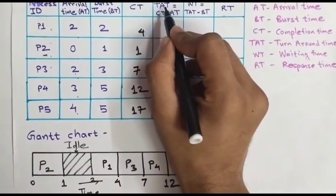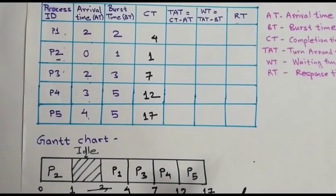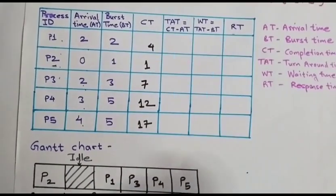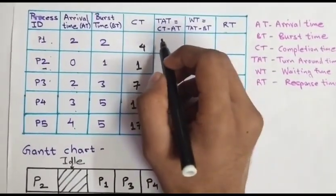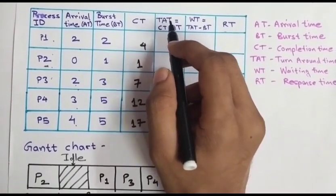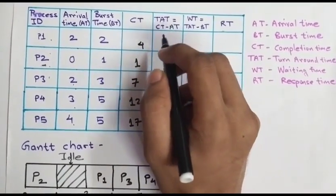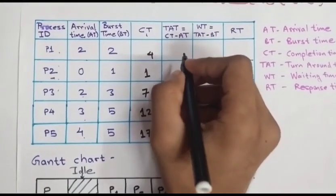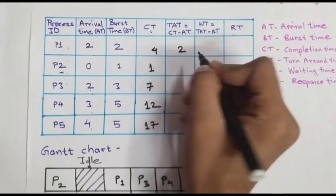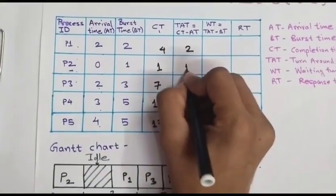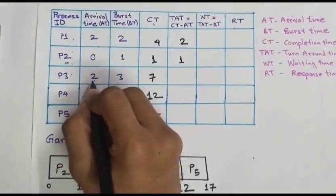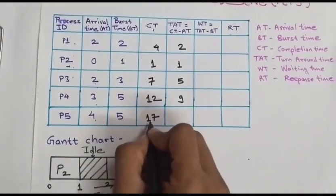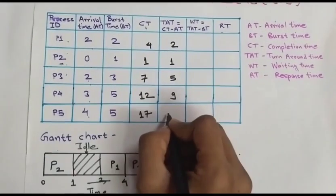Now find the TAT. TAT is turn around time. Turn around time is the total time from arrival time to completion time. Turn around time is equal to completion time minus arrival time. For P1, 4 minus 2 is 2. For P2, 1 minus 0 is 1. For P3, 7 minus 2 is 5. For P4, 12 minus 3 is 9. For P5, 17 minus 4 is 13.